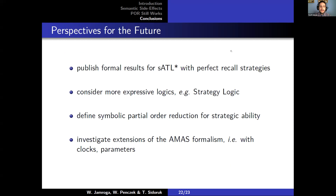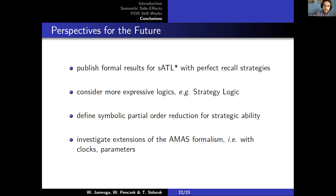As for future perspectives: in the nearest future, we plan to publish formal results for the case of perfect recall strategies, for which we conjecture everything should also be applicable. The case for perfect information is not possible — reductions do not work in this case, as we have already shown in the previous paper. As for more distant perspectives, we can consider reductions in the setting of more expressive logics, for instance strategy logic. We can also define symbolic reduction methods, first for ATL, then maybe for strategy logic as well. Another avenue could be to investigate various extensions of our AMS formalism, for instance to timed systems or for parametric verification. In fact, we already have one such extension in the setting of attack-defense trees, where we translated this formalism to AMS, which then had to be extended with various attributes inherent to the attack-defense tree formalism.